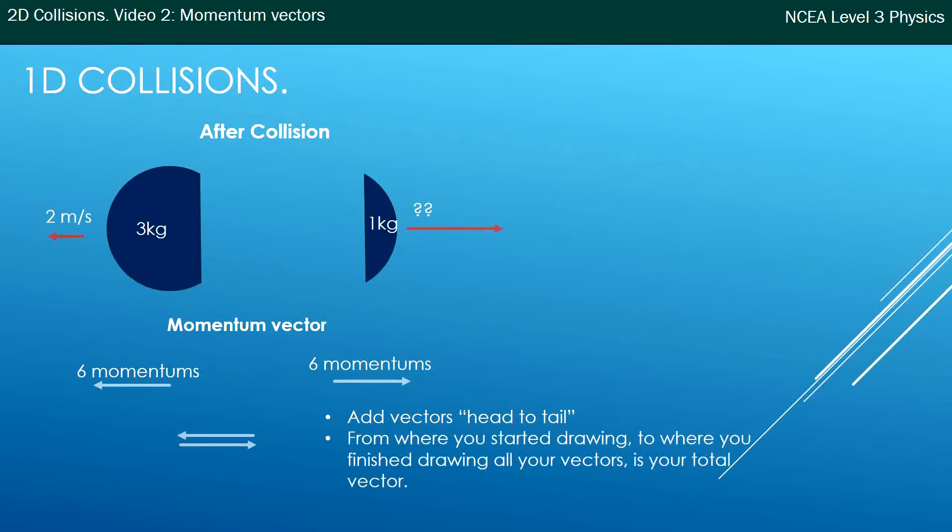Then from where we started, so where we started drawing the first arrow to where we finished drawing the last arrow, is your total. Now in this case, where we started from that dot and where we finished from is the same spot. So if you end where you started, that total is zero. That makes sense. Zero momentum there.